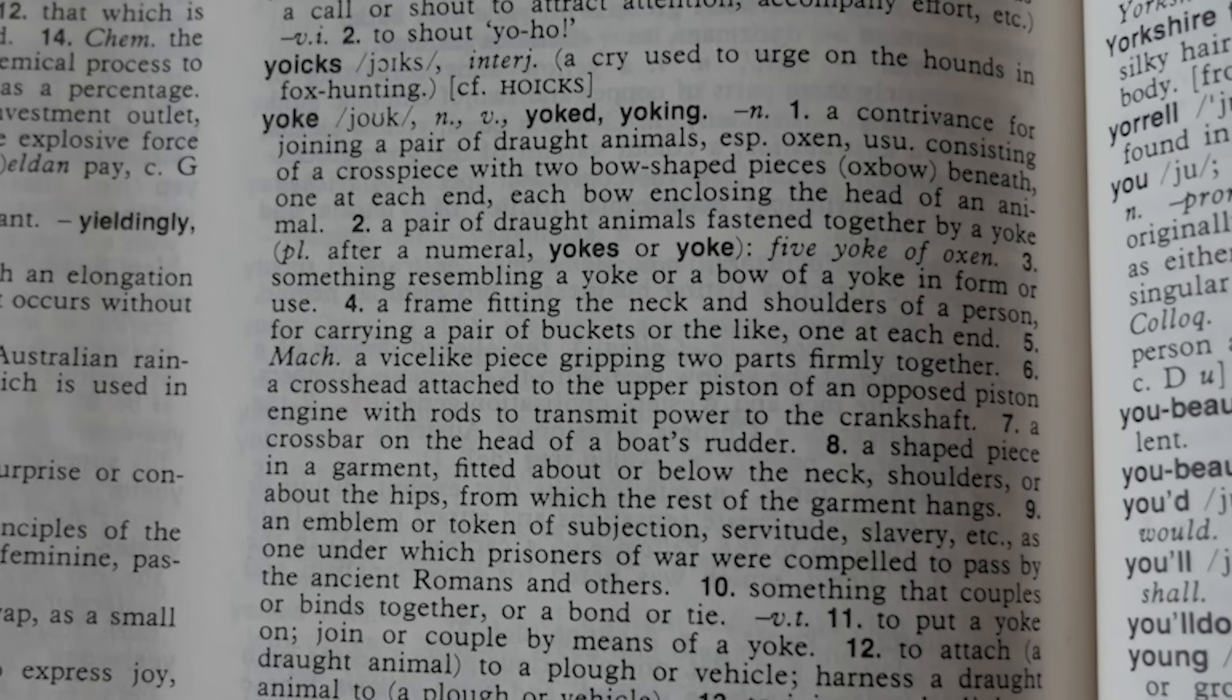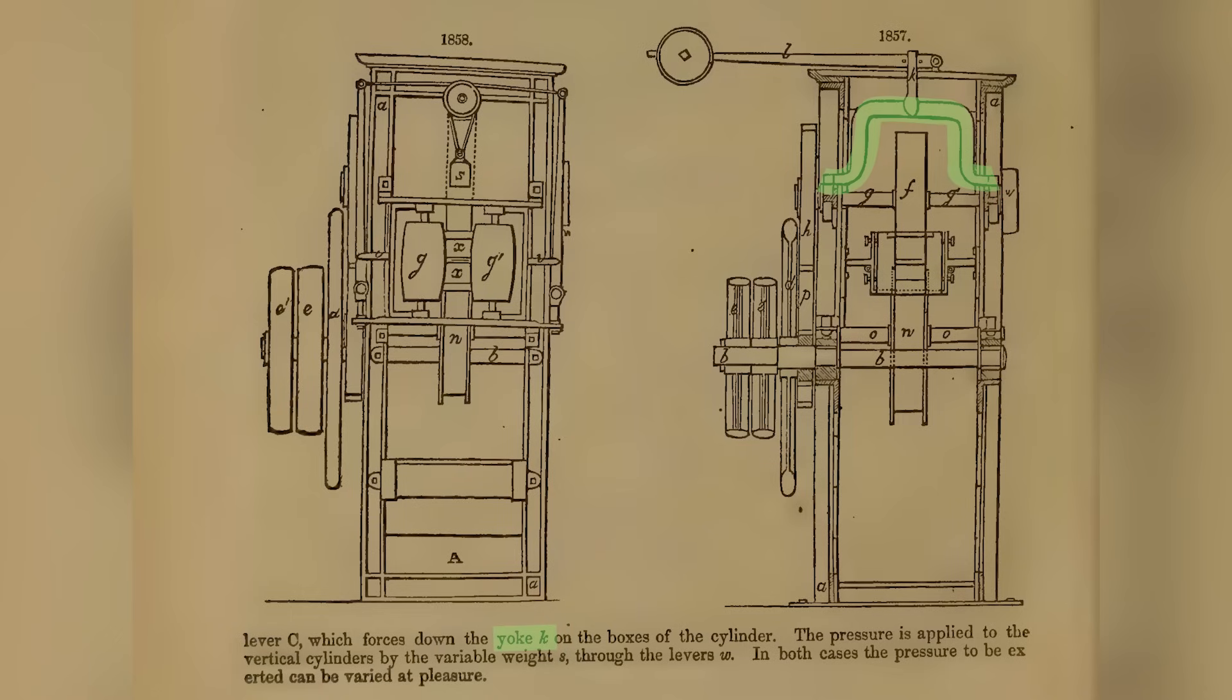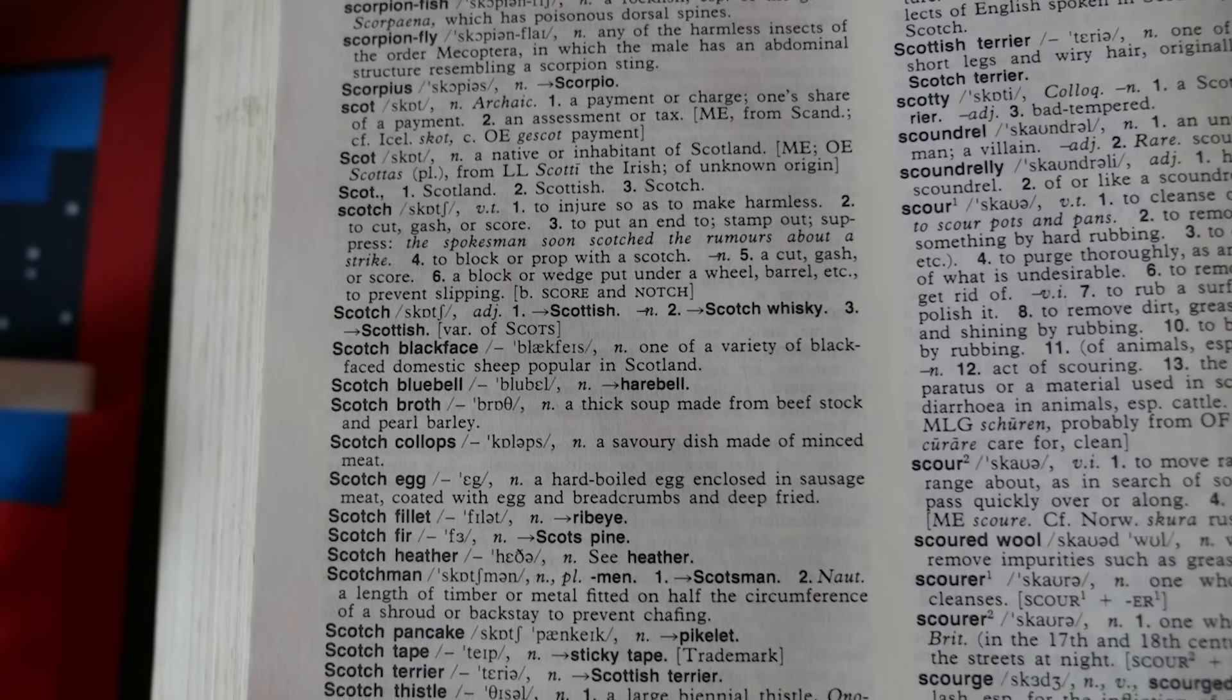Well, yoke refers to a device which connects two parts together controlling their movement, and is referenced heavily in engineering documentation from the time. But Scotch was harder to pin down.